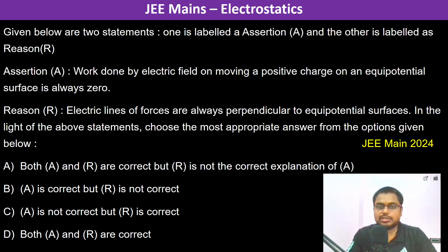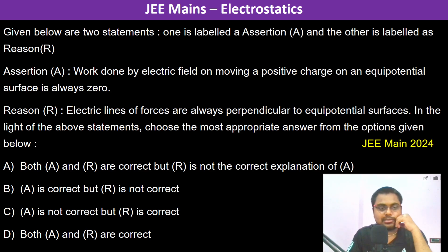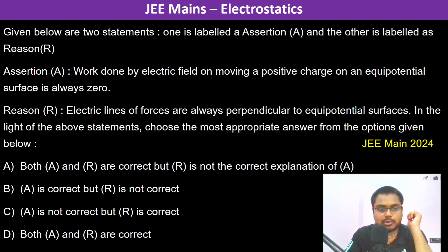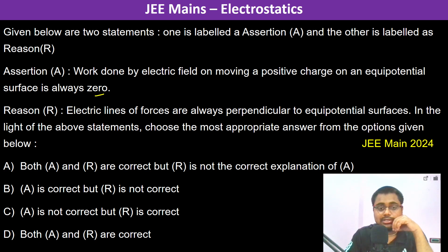Given below are two statements: one is labeled as Assertion and the other as Reason. Assertion: Work done by the electric field on a moving positive charge on an equipotential surface is always zero.